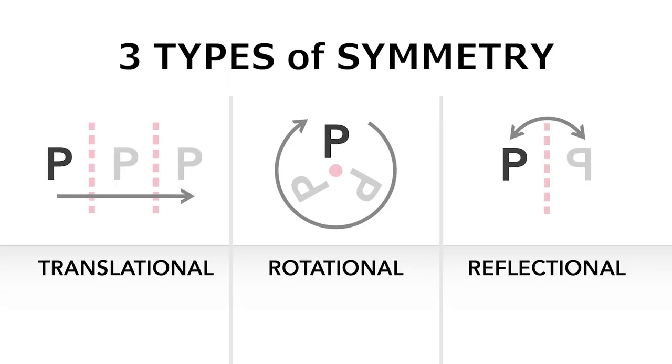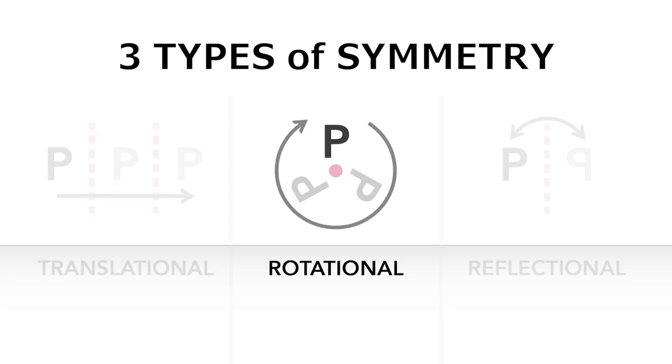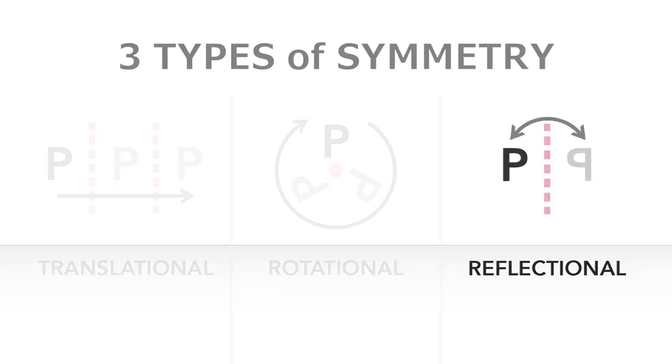So let's look at three types of symmetry that appear in musical patterns, including translational symmetry, rotational symmetry, and reflectional symmetry.